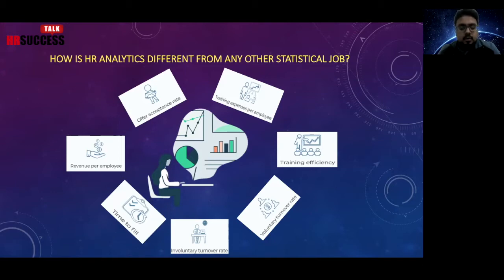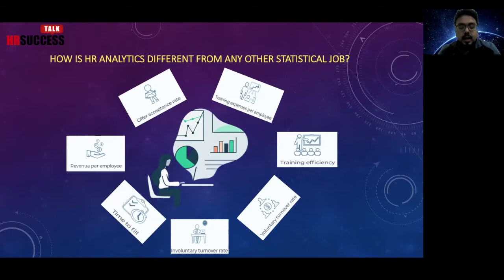Offer acceptance rate is the number of accepted formal job offers divided by the total number of job offers given in a certain period. A higher rate indicates a good ratio. If it is lower, this data can be used to redefine the company's talent acquisition strategy.